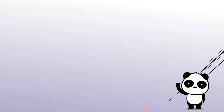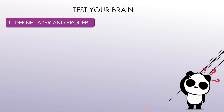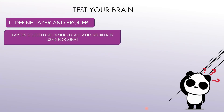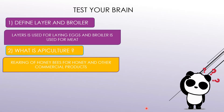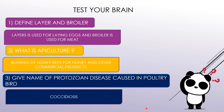I hope this module was very clear to you all. Now it's time to test your brain. First question: define layer and broiler. A layer is used for laying eggs, whereas a broiler is used particularly for meat. Second question: what is apiculture? Rearing of honey bees for honey and other commercial products is termed apiculture. Third question: give the name of the protozoan disease caused in poultry birds. The answer is coccidiosis.